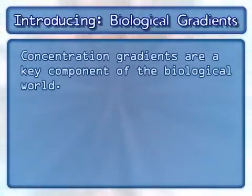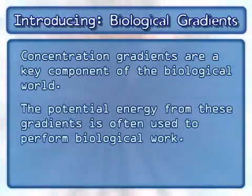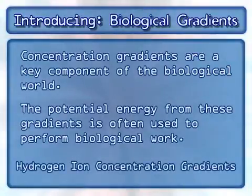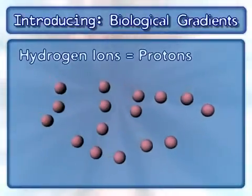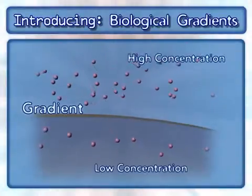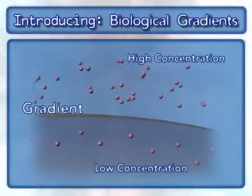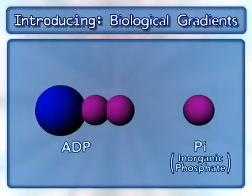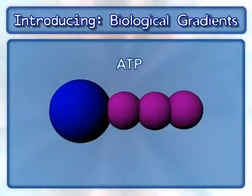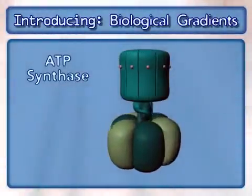Concentration gradients are a key component of the biological world. The potential energy from these gradients is often used to perform biological work. Here we will focus on hydrogen ion concentration gradients. Hydrogen ions are also known as protons. A gradient exists when there is a higher concentration of a molecule in one compartment compared to a neighboring compartment. This animation will demonstrate how the potential energy from a hydrogen ion gradient uses ADP and inorganic phosphate, also known as Pi, to synthesize ATP. This process involves an enzyme complex called ATP synthase.